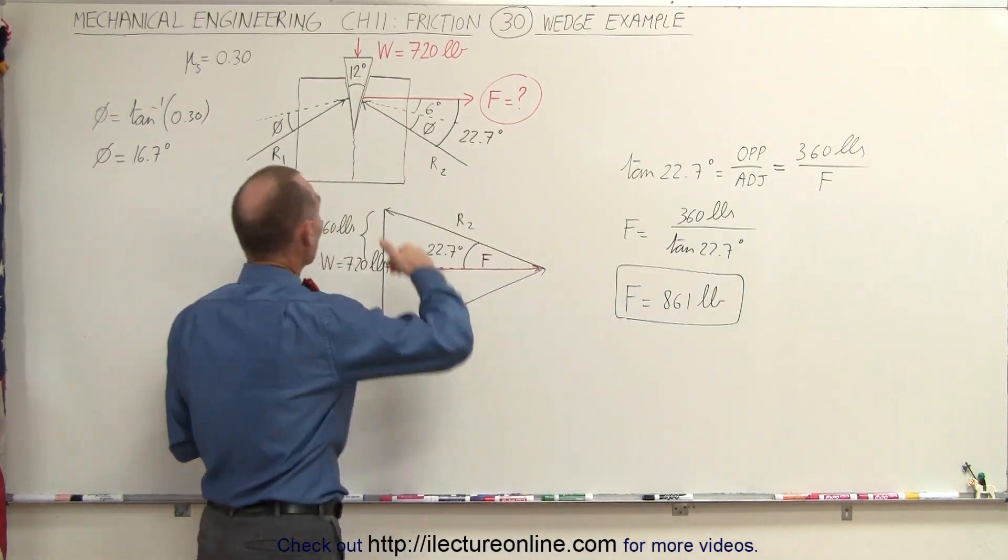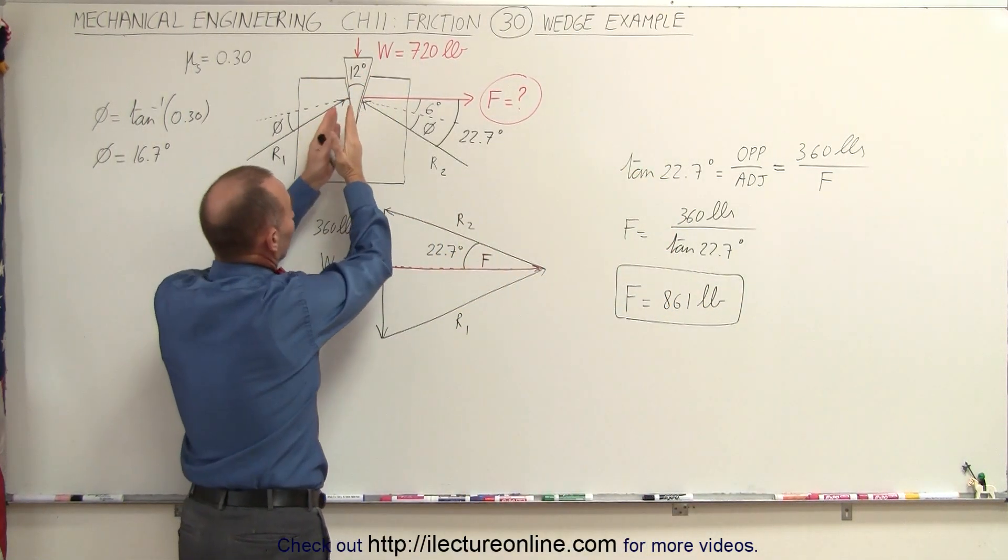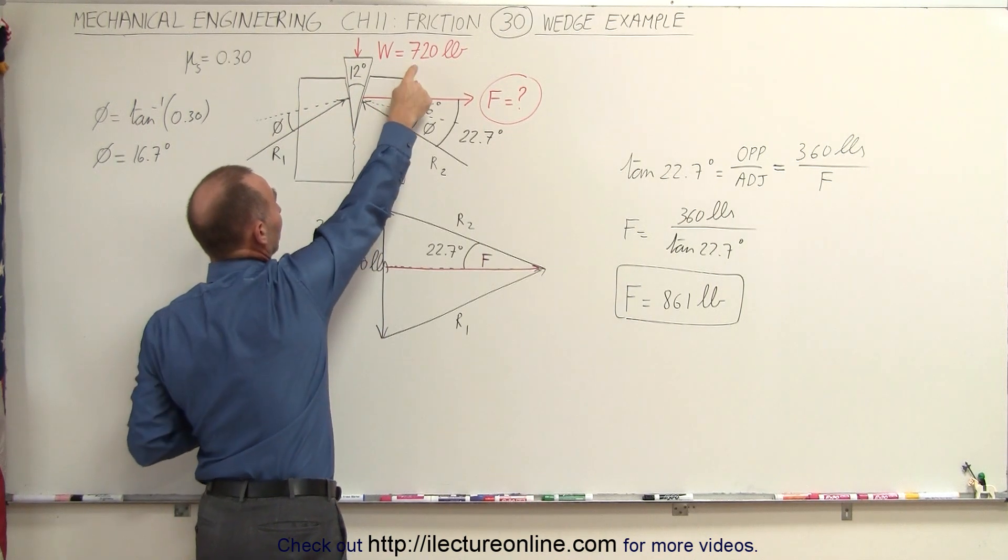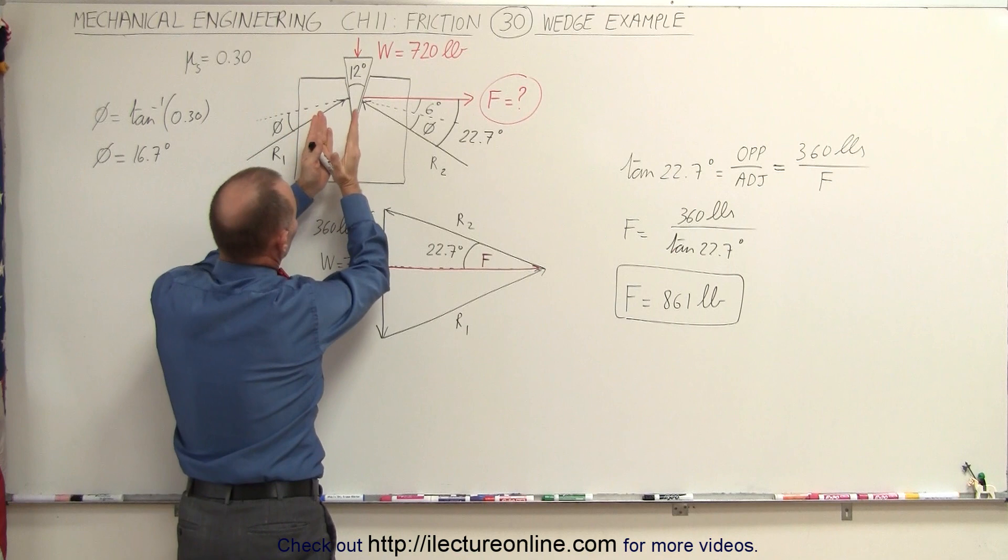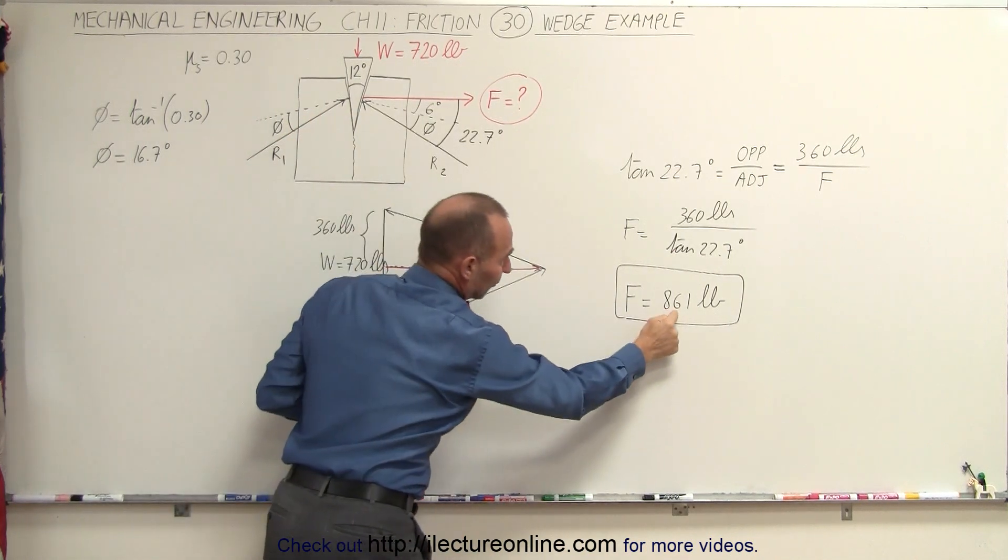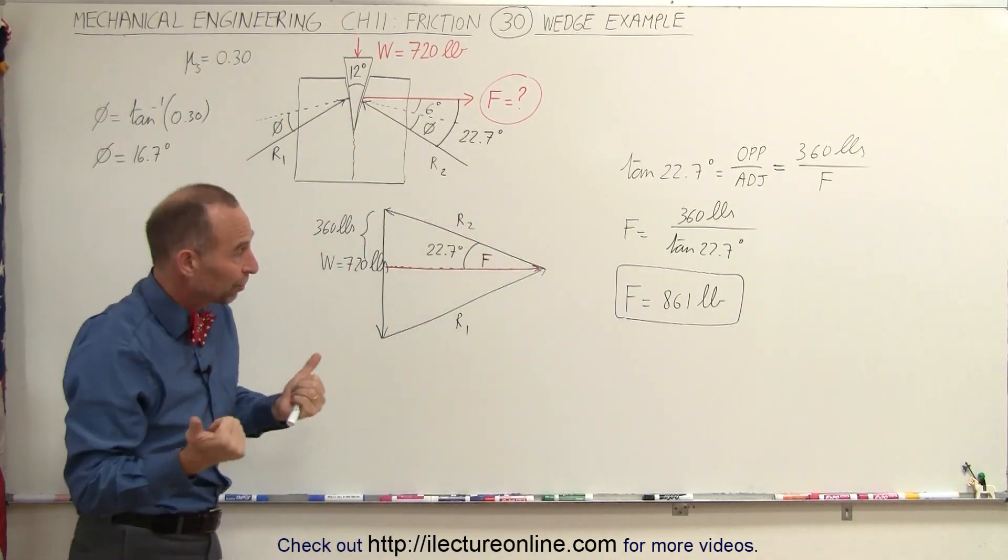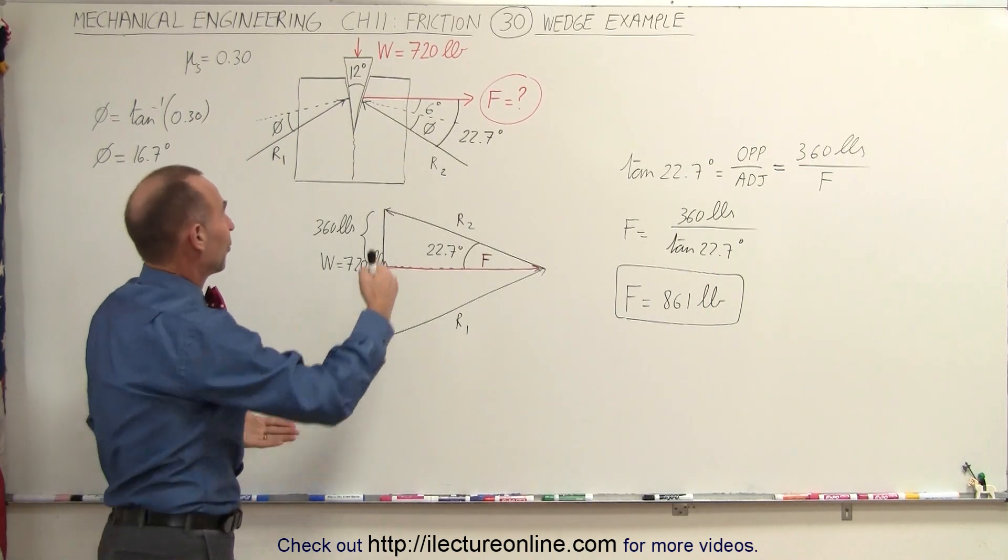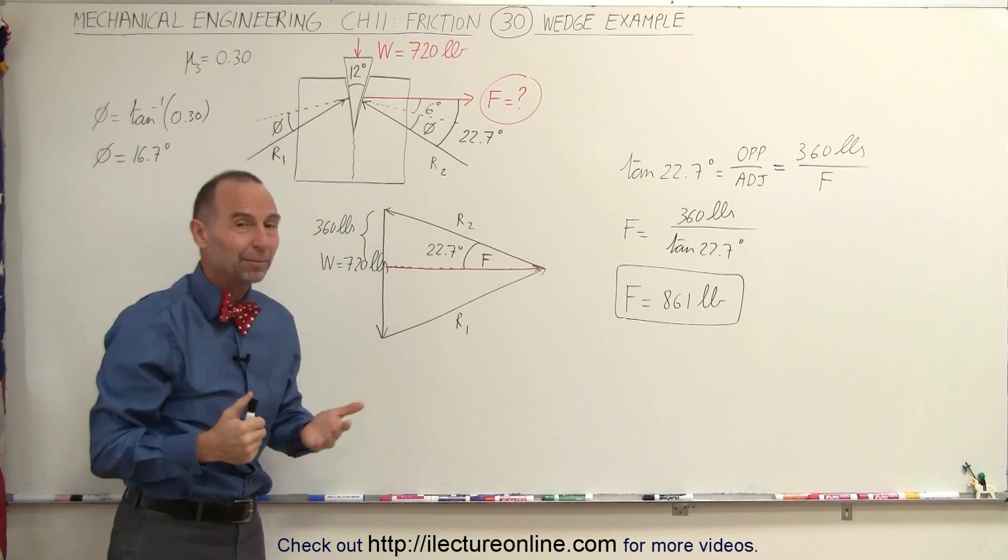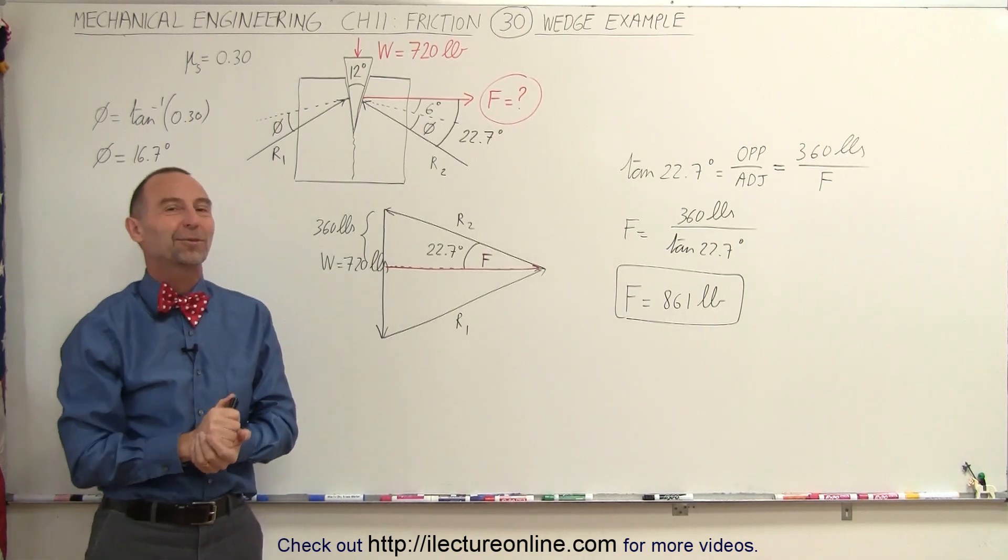Now you can see that by driving a wedge into a piece of wood, when we apply this force, based upon the coefficient of static friction and the angle of the wedge, we apply a force horizontally against the wood of 861 pounds to the right, and of course an equal and opposite force to the left, 861 pounds. And that's how it's done.